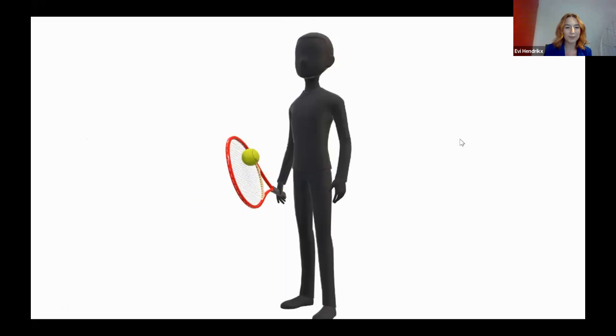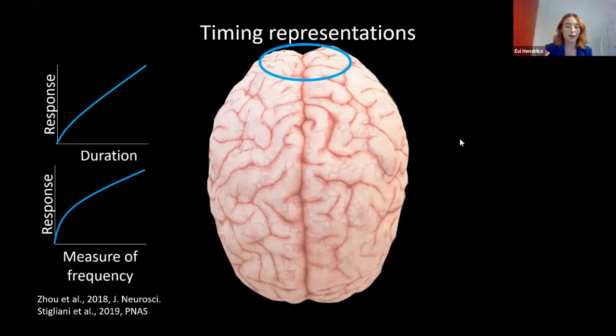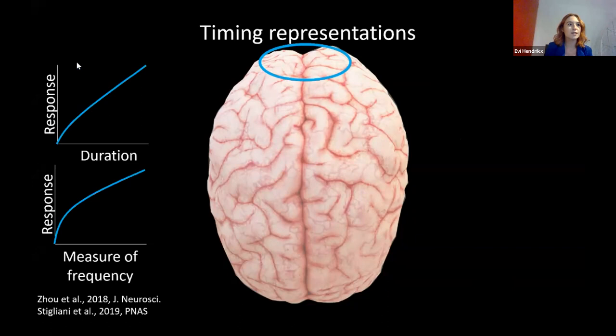We use timing every day in our lives, for example for the precise planning of speech and sports. But how is timing represented in the brain? What we know so far is that if you see a visual event with a specific duration, if the duration is longer, your early visual areas will have a higher activation. Also if this event occurs more often within a given time frame, there is also more activation within early visual areas. These responses increase, but this increase is not necessarily linear. I'll refer to these types of responses as monotonic responses.